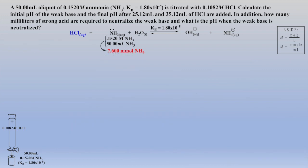So now let's calculate the pH after 35.12 mL of strong acid are added to our aliquot of weak base. Hydrochloric acid is written as a reactant here because it will combine with the lone pair of the weak base to afford the conjugate acid of the weak base. We write down quantities of weak base and acid given directly under the species, then convert to millimoles. The 3.8 millimoles of protons will react completely with the 7.6 millimoles of weak base to afford 3.8 millimoles of ammonia and 3.8 millimoles of conjugate acid ammonium. If you are halfway to the stoichiometric point, then the pH is simply equal to the pKa.